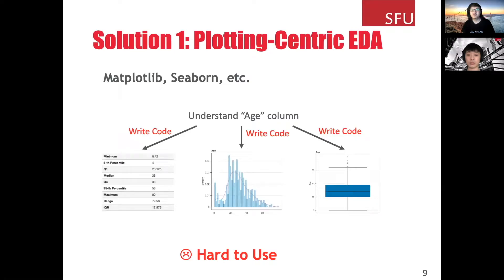Currently, there are two solutions for doing EDA in Python. The first one is plotting-centric EDA. That is, using plotting tools such as Matplotlib or Seaborn to create visualizations or statistics. Using the previous example, to understand the age column, data scientists will write code to generate statistics, write code to generate histogram, and write code to generate the box plot. Since the APIs provided by plotting tools are at a very low level, the plotting-centric approach is hard to use for both beginners and experts. For beginners, they will spend much time to figure out how to write plotting code. For experts, they need to write lengthy and repetitive code whenever they analyze new data.